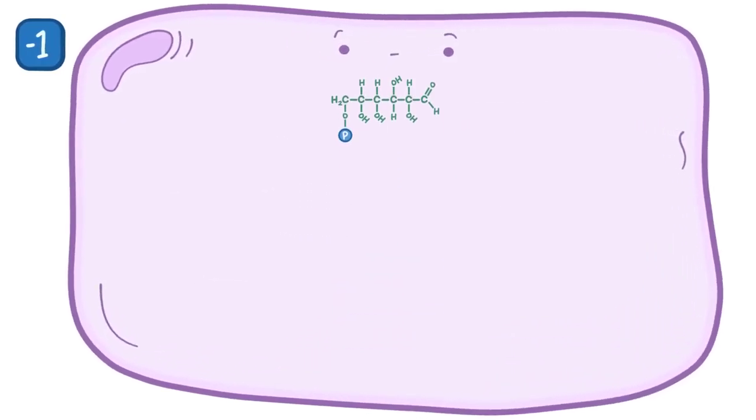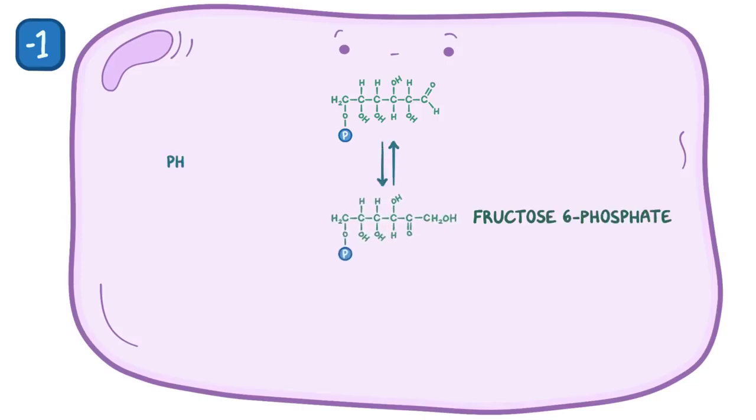Glucose-6-phosphate is then converted to its isomer, fructose-6-phosphate, by an enzyme called phosphoglucoisomerase. So at this point it's still a 6-carbon molecule.